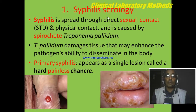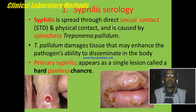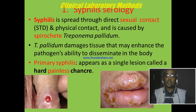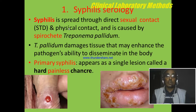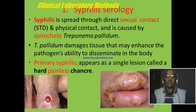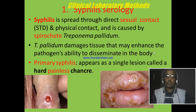Syphilis serology will be the first. Syphilis is a sexually transmitted disease which is caused by a spirochete known as Treponema pallidum. Treponema pallidum is transmitted from person to person during sexual contact or any other skin contact with the lesion. The bacteria has the ability to damage tissues and disseminates throughout the body to cause different stages of syphilis.